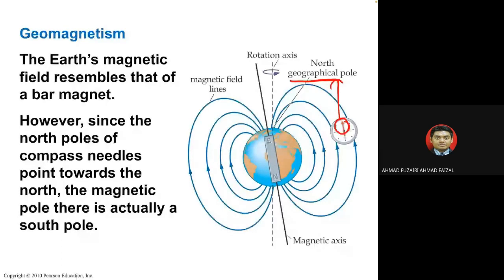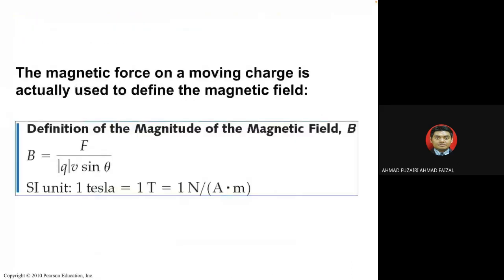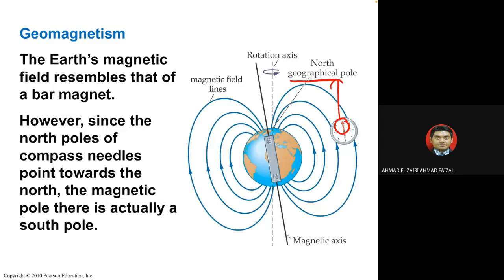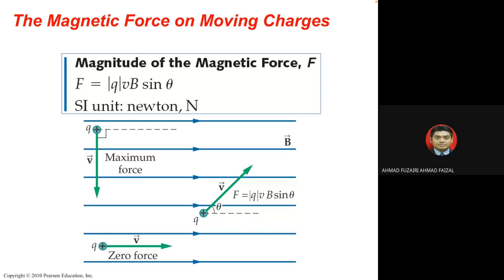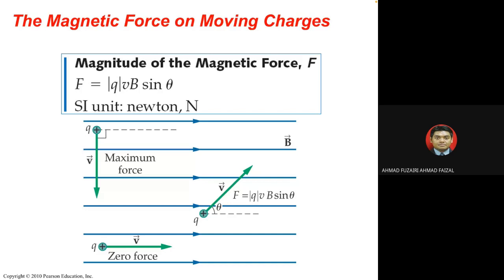We then learn about magnetic force on a moving charge: F equals qvB, or F equals qvB sin θ. The SI unit for magnetic force is newton. Here θ is the angle between velocity and the magnetic field, giving us F = qvB sin θ.